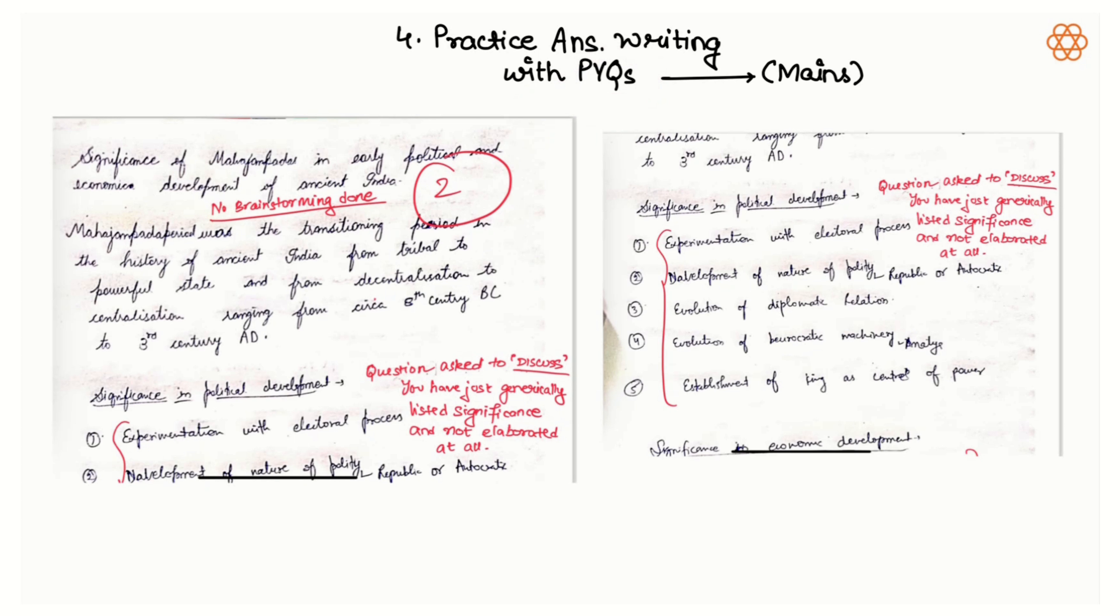See, when you write answers in mains, for example you are writing an answer on Mahajanapadas. If that topic is missed, you can take a previous year question, brainstorm with Super Kalam along with your NCERTs and write the answer. Then you don't need to touch that topic again. Same applies to any other subject. For example, there is a question on preamble that you have to practice. You can take out five years previous year questions of mains, pick out the question on preamble, study it with Super Kalam or with your M Laxmikanth textbook, brainstorm it, mind map, and answer that one question from previous year question paper.